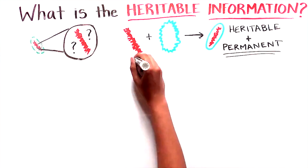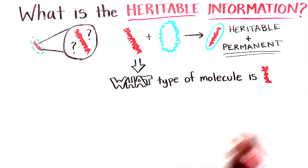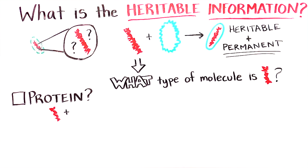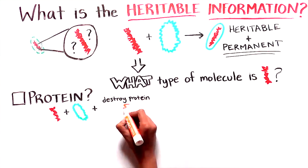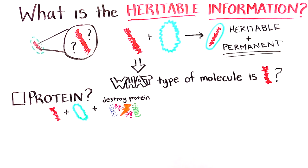But the question still remained, what type of molecule was this heritable information? At the time, most people, including Avery, thought the answer was protein. But they found that enzymes that destroy proteins could not block the activity of the substance. It still made rough bacteria look smooth. This meant the substance was not protein.